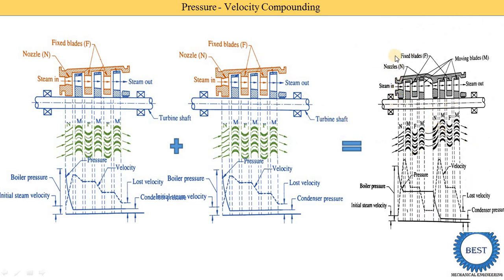Now compare it with this diagram. The first one is the nozzle — here you see it is the nozzle — then moving plate, then fixed plate and moving plate, meaning here three stages are there. In this pressure-velocity compounding we use two stages instead of those three stages.